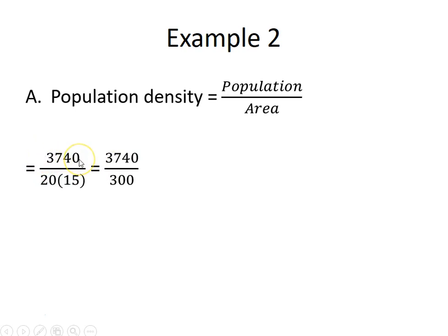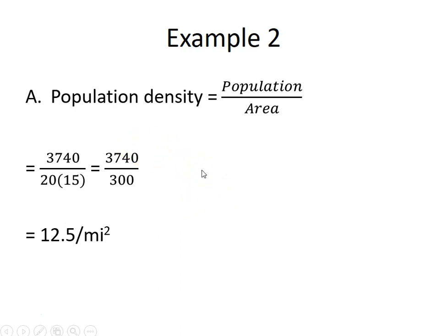We had 3,740 animals and the area is 20 times 15, which is 300 square miles. Dividing 3,740 by 300 gives us 12.5 animals, which rounds to about 13 animals per square mile. Since the limit is 15 animals per square mile, the answer is yes — there is enough area for all the animals to survive.